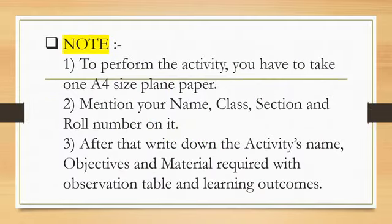Before going to start our activity, you have to remember some points. First, to perform the activity you have to take one A4 size plain paper. After that, mention your name, class, section and roll number on it. After that, write down the activity's name, objectives, material required with observation table and learning outcomes.